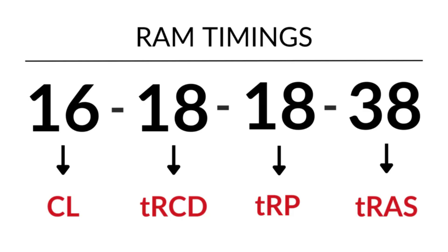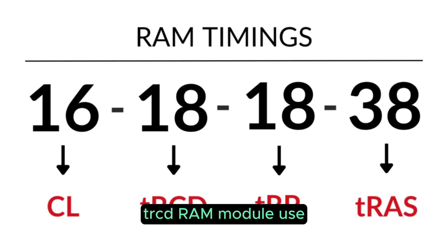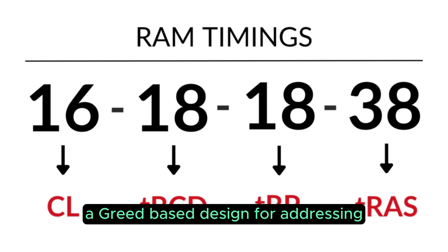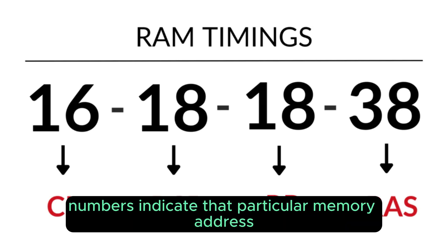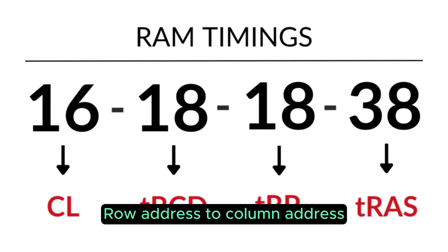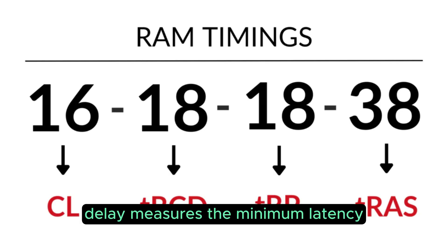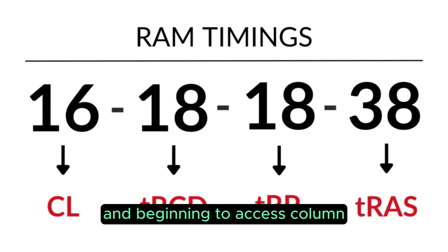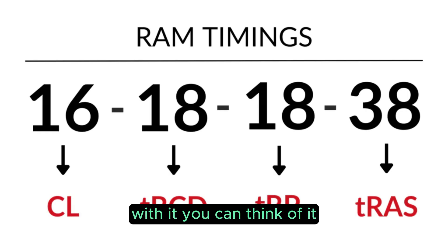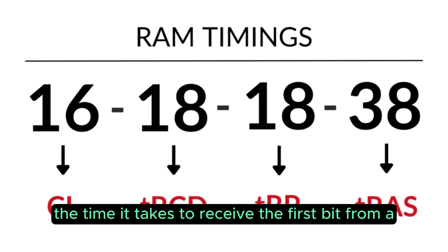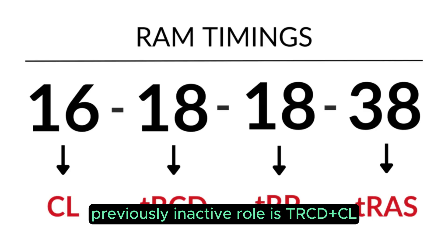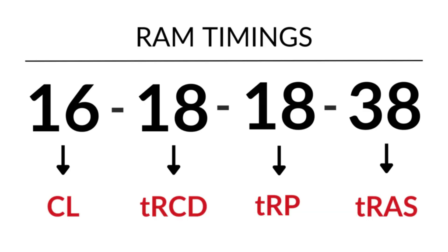The second number is TRCD. RAM modules use a grid-based design for addressing, where the intersection of rows and columns indicates a particular memory address. Row Address to Column Address Delay (TRCD) measures the minimum latency between activating a new row in memory and beginning to access a column within it. You can think of it as the time it takes RAM to get to the address. The total time to receive the first data from a previously inactive row is TRCD plus CL.